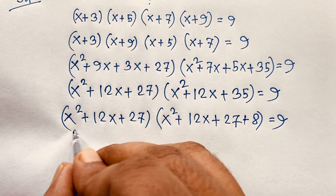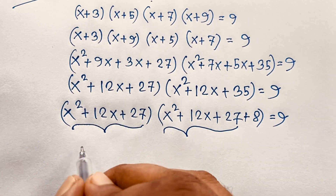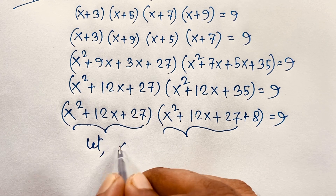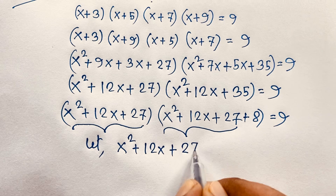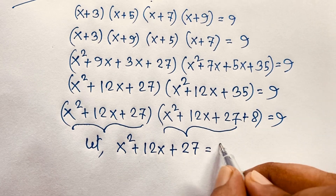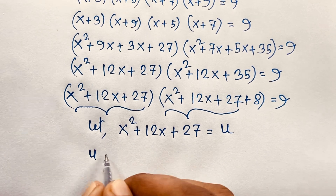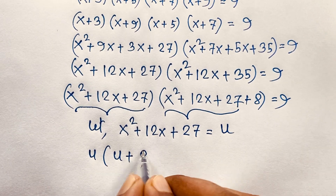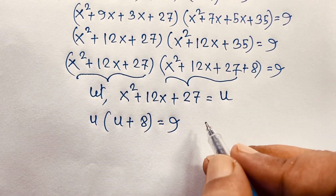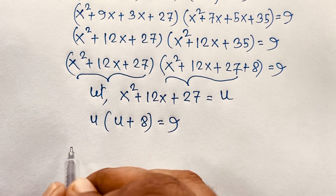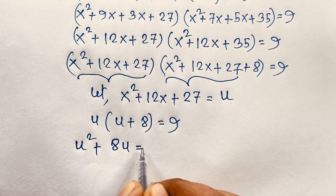Now, both expressions share the same quadratic core. So let u = x² + 12x + 27. Then the equation becomes u times (u + 8) = 9, which expands to u² + 8u = 9.